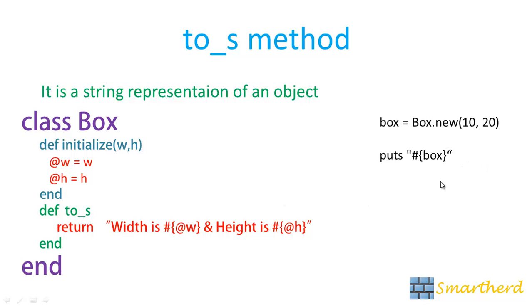There is another simpler way to call this method to underscore s. What is that? Let's see. Puts box. This is simply an object name. No need of using interpolation.